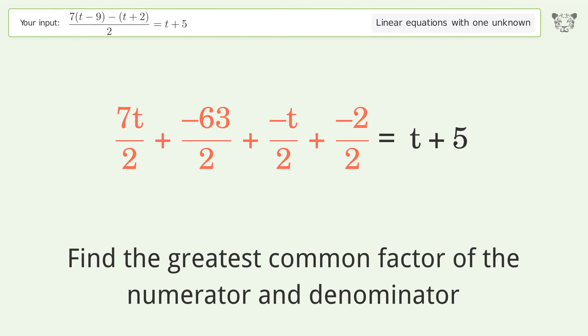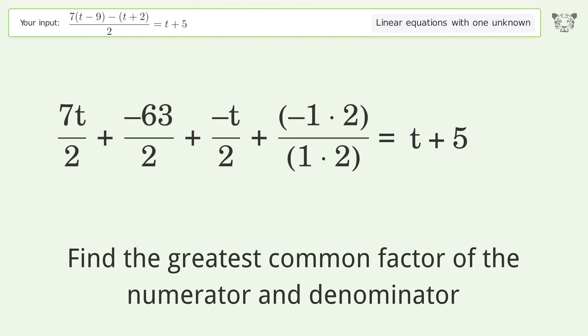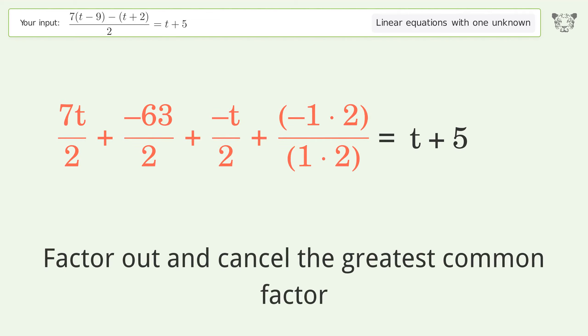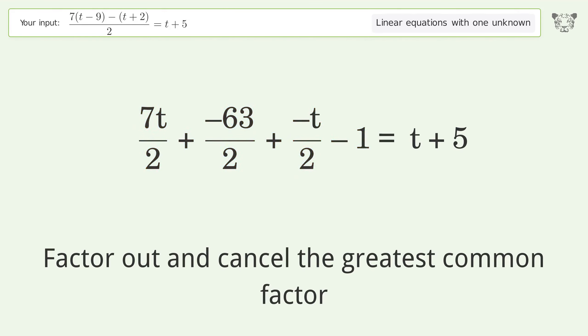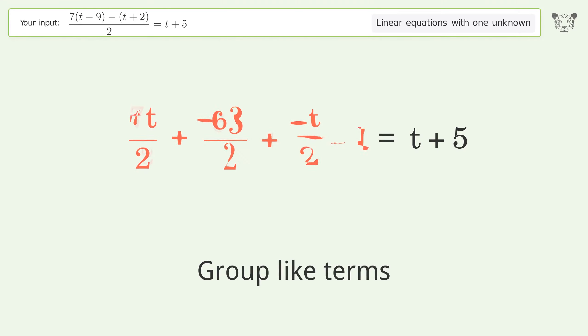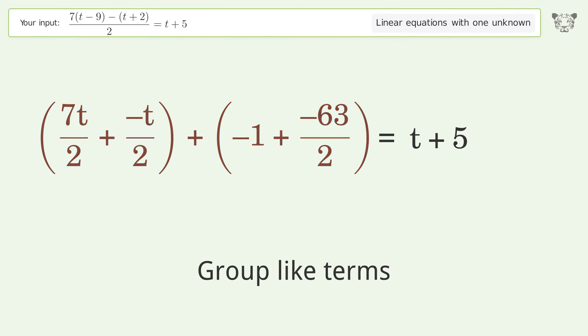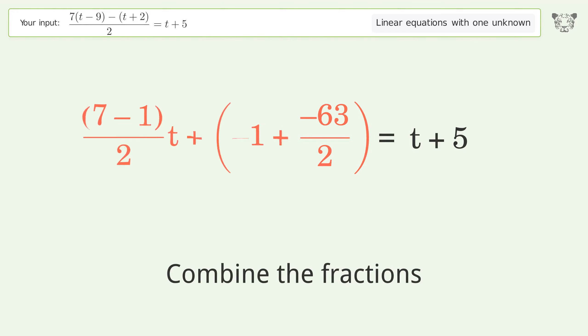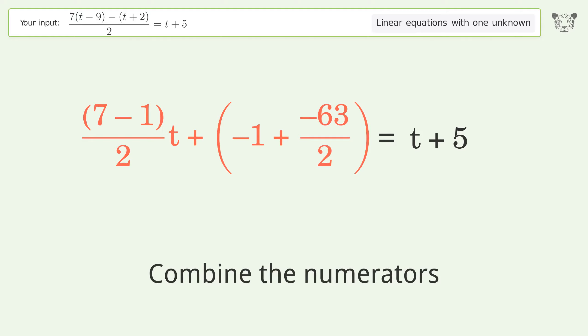Find the greatest common factor of the numerator and denominator. Factor out and cancel the greatest common factor. Group like terms, then combine the fractions and combine the numerators.